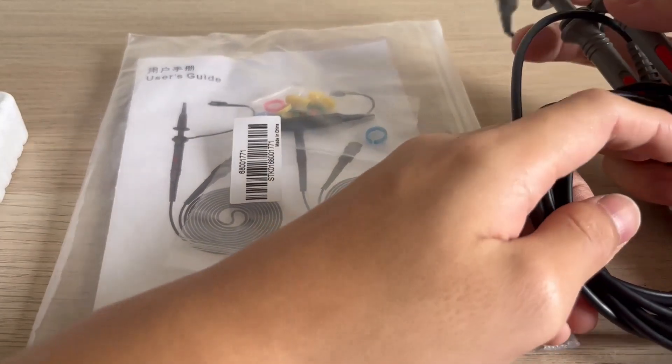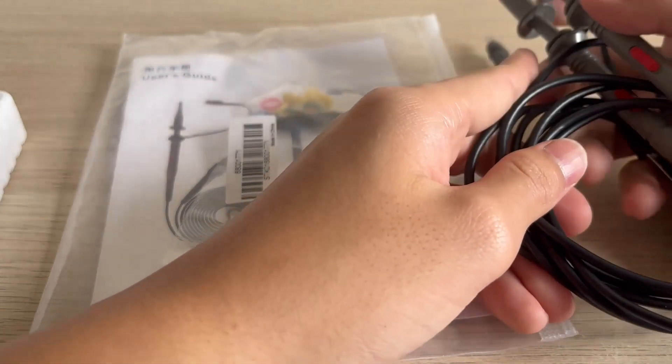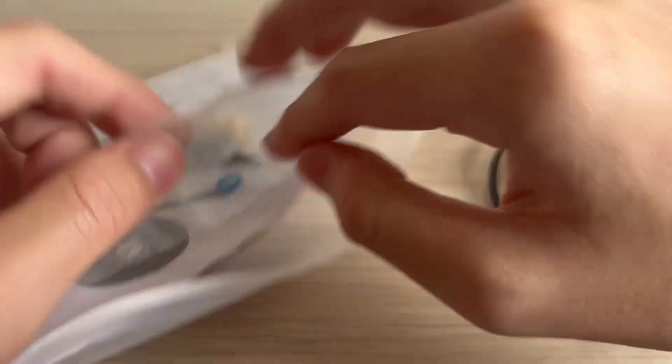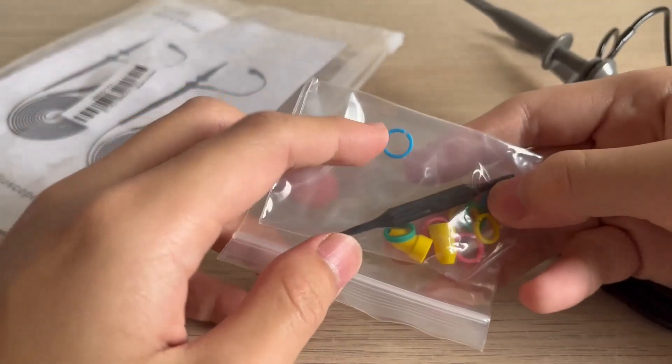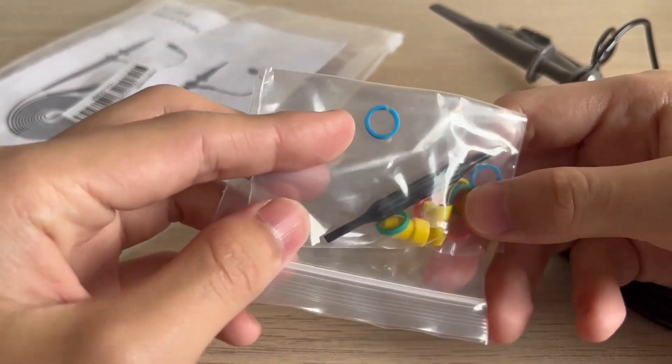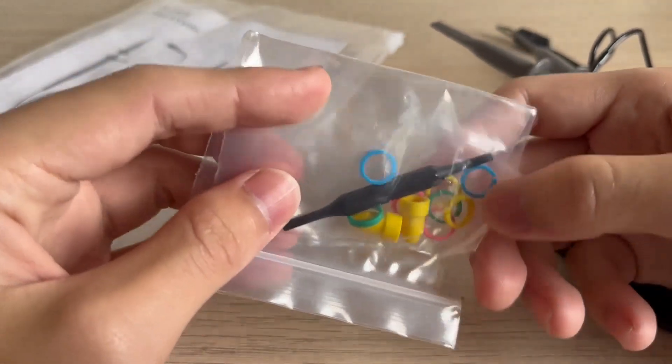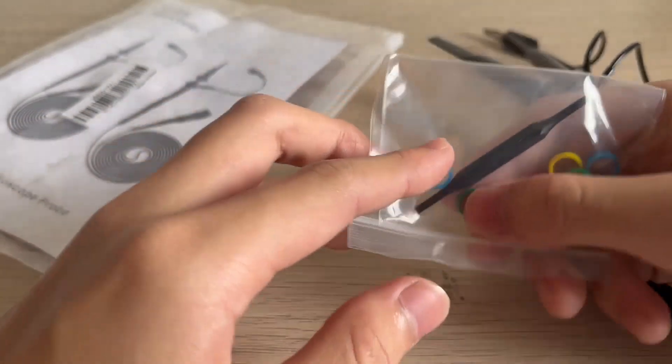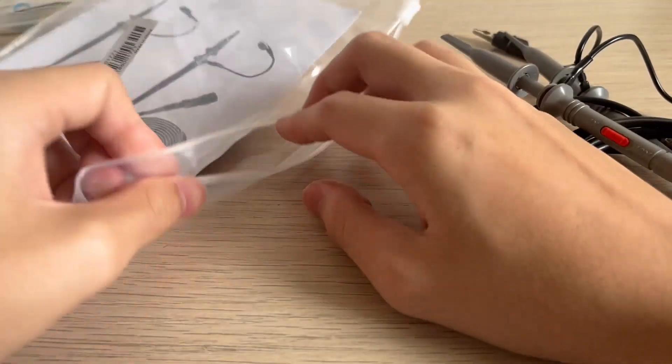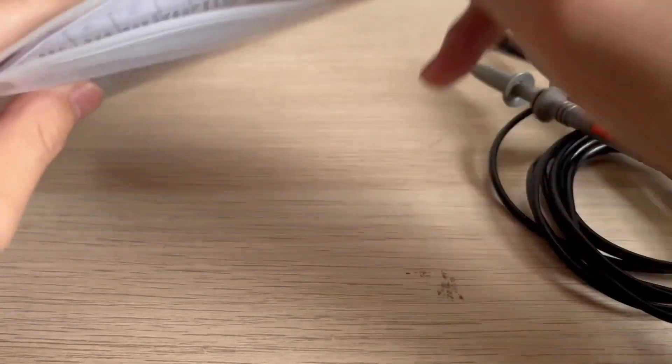This one is the different colored split ring so that it can actually identify which probe you are measuring and not mess things up. Like for example, if you want to measure AC and DC, you don't really want to mess those two voltages up because AC and DC they are different components.